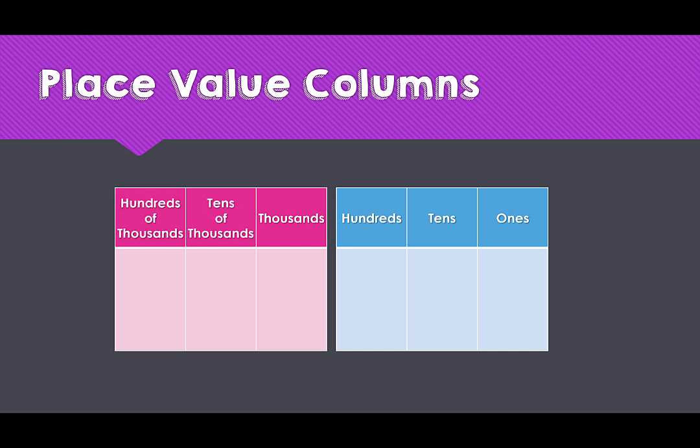Notice that this next set of place value columns follows the same pattern as our first three — with the ones or thousands, tens and tens of thousands, and finally hundreds and hundreds of thousands.